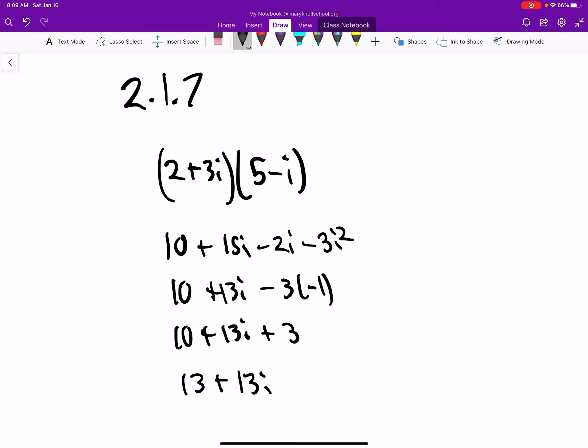What we need to do is just 2 times 5 is 10, 3 times 5 is 15i, and then 2 times negative i is negative 2i, and 3i times negative i is negative 3i squared.